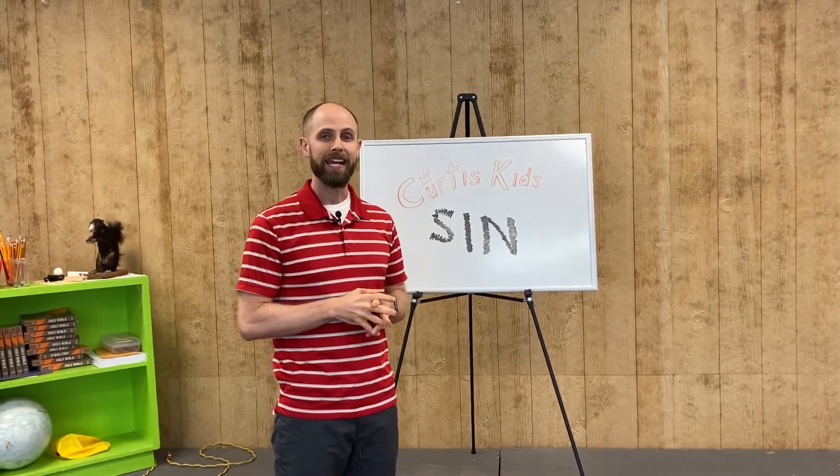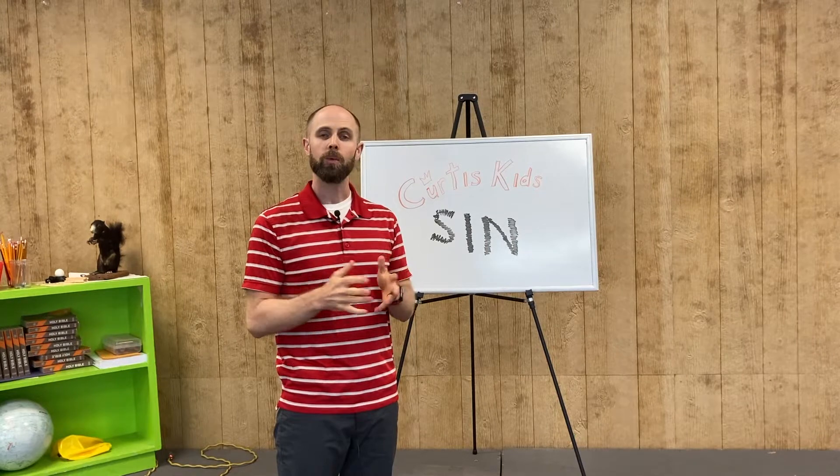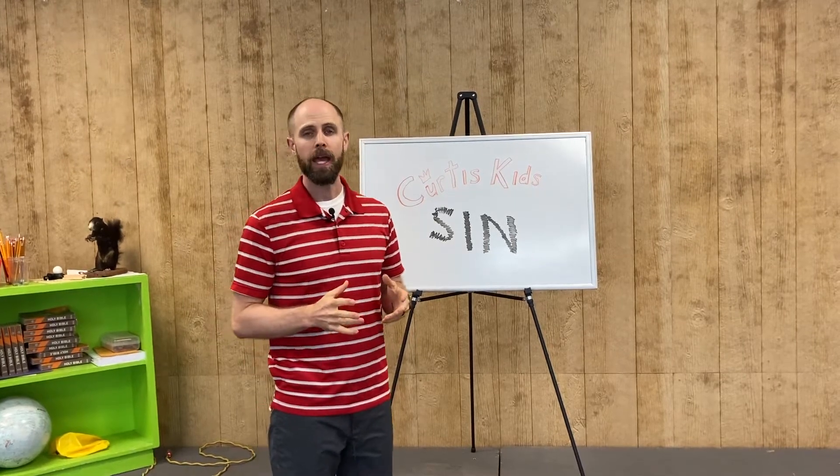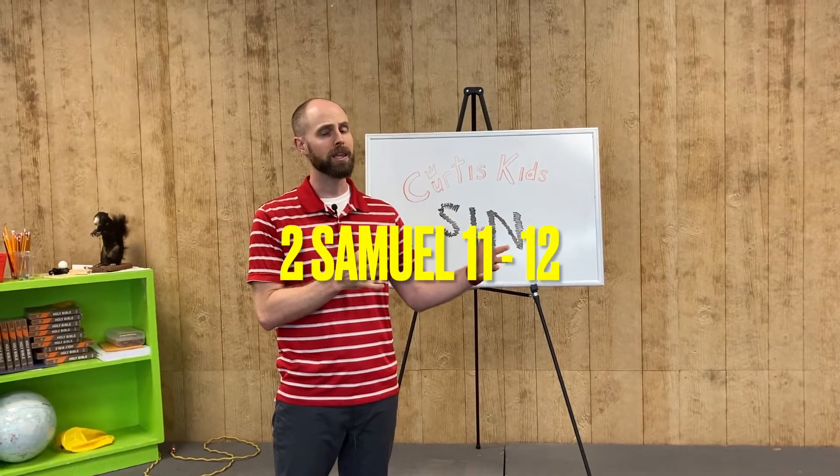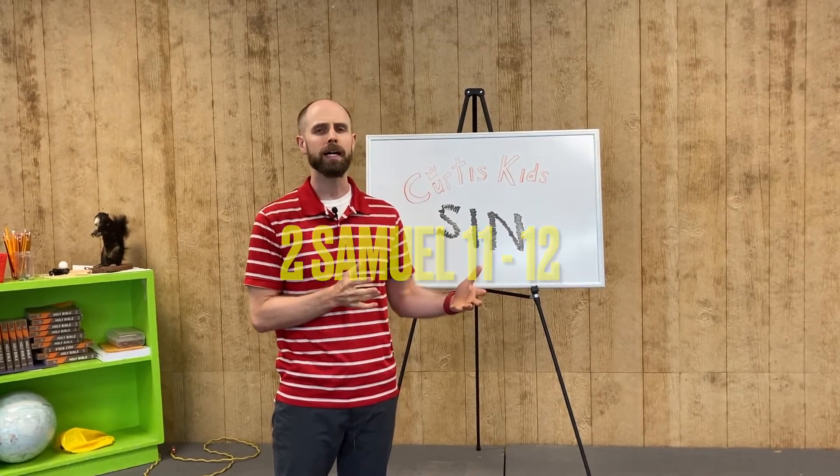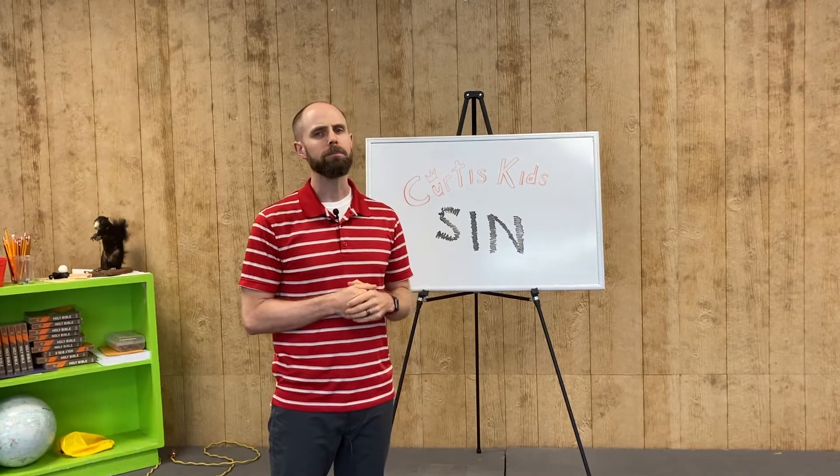Now, today as we keep going through the Bible, we're continuing to talk about King David. And in 2 Samuel 11 and 12, we see that even though David had done a lot of great things, he trusted God, he obeyed God, he really messed up bad.